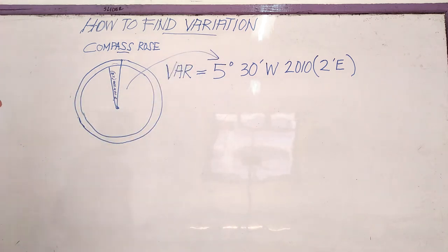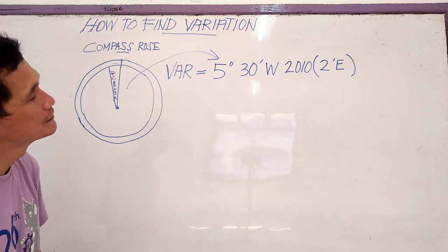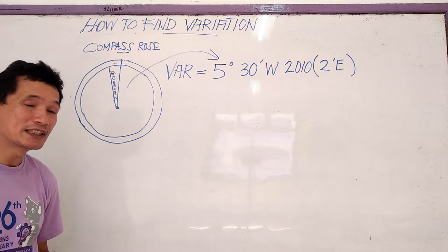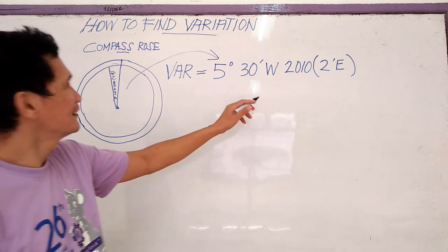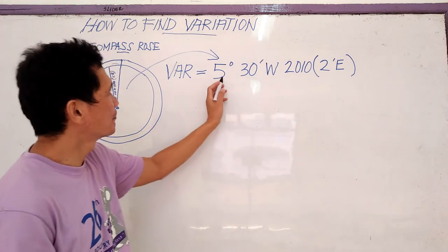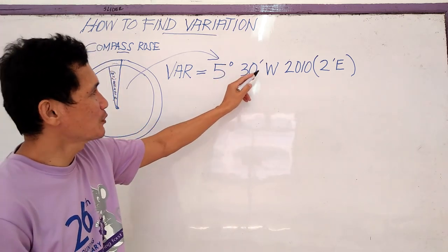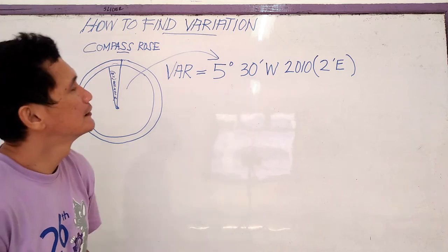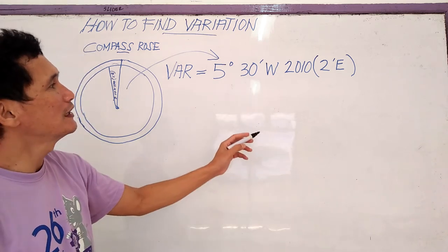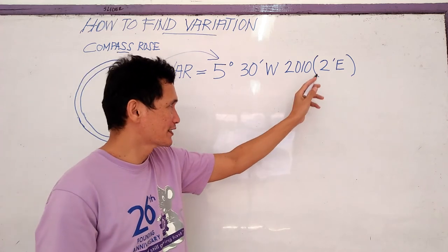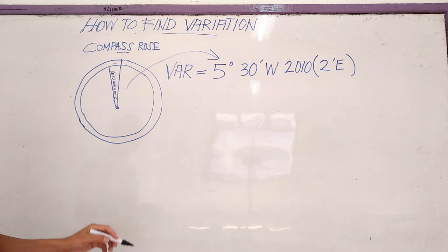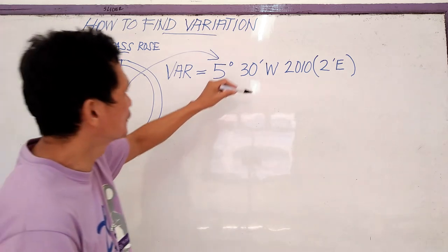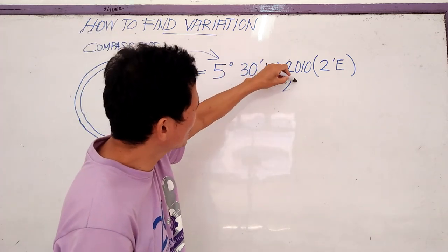Now we will find the variation in 2020 at present, because at 2018 this is the variation of 2010, 5 degrees 30 minutes west, and the angle of yearly change is 2 east. So we will find the variation of 2020.